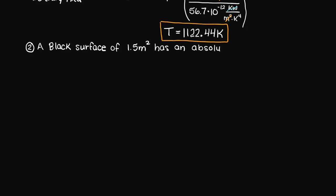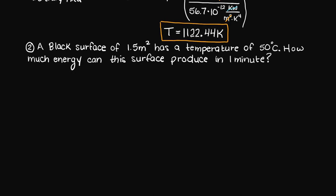Now, let's move on to the second question. This question states that the black body of a surface area of 1.5 m² has a temperature of 50 degrees Celsius. How much energy can be produced by this surface in one minute?